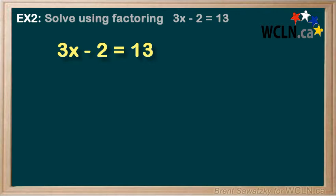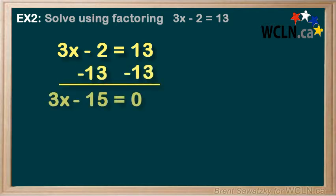First let's get the zero on the right. Always our first step. To do that here we'll subtract 13 from both sides and we're left with 3x minus 15 equals zero. Perfect. Zero on the right so let's move on.